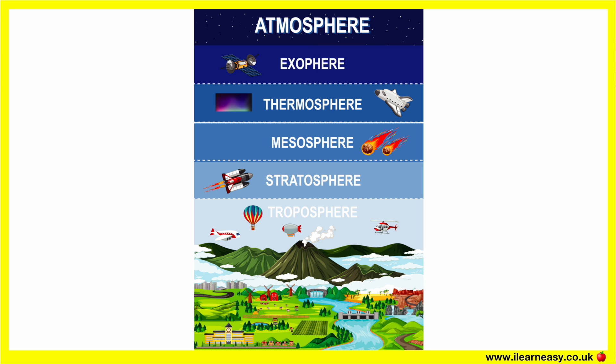Layers of the Atmosphere. In this video, we will learn about the different layers of the atmosphere. The Earth's atmosphere has five main layers and several secondary layers. The five main layers include the troposphere, stratosphere, mesosphere, thermosphere, and exosphere.